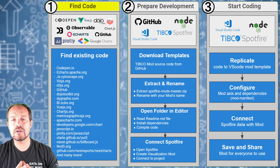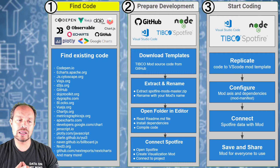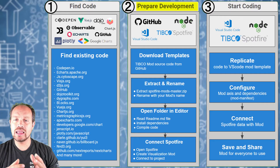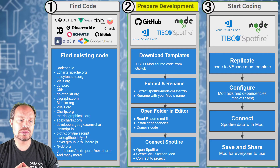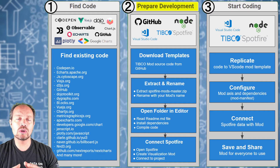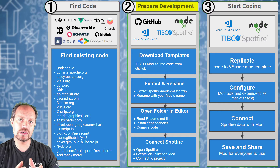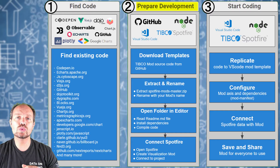The next step is to prepare for development. Preparing for development means that you have to have everything ready by downloading a blank template from TIPCO GitHub, then compiling, downloading all the dependencies, and connecting the live server from Visual Studio Code with Spotfire.